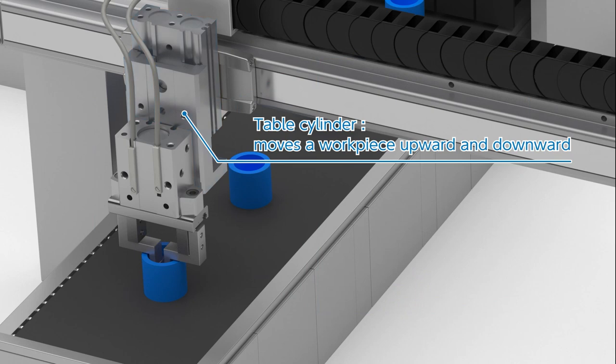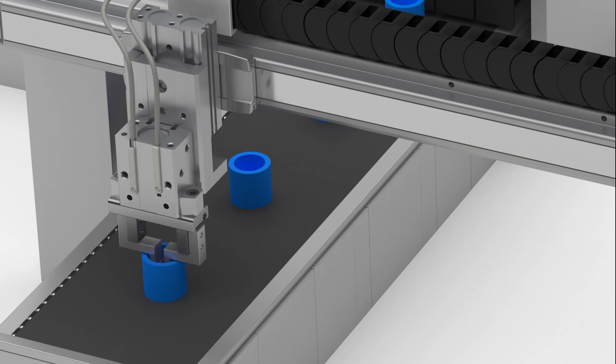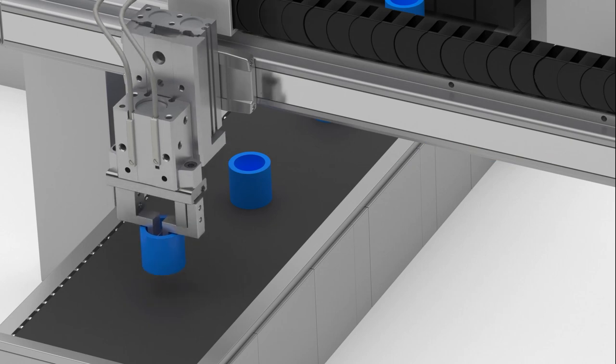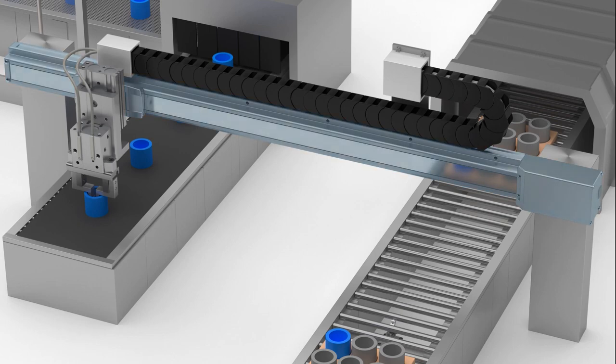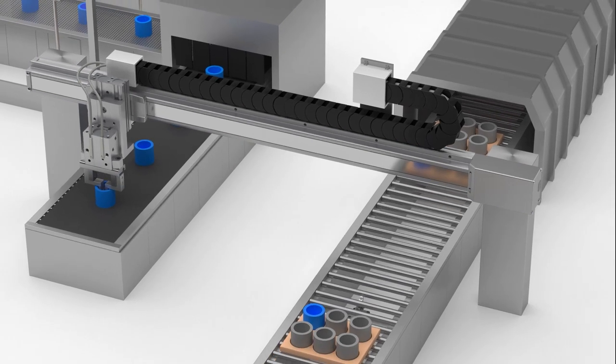A table cylinder positions the gripper to a suitable gripping position. And once the workpiece has been gripped, it is lifted off the conveyor belt. A slide table type electric actuator is used to transfer the workpieces from the conveyor belt onto the pallet.